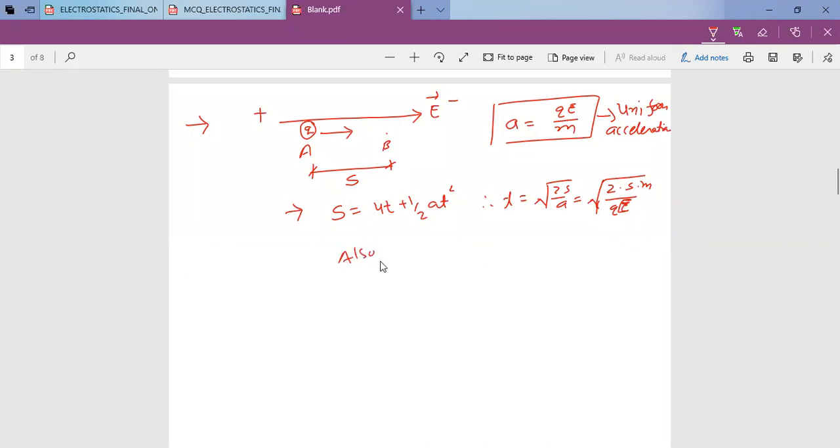Also we can write, suppose potential difference is V, then V equals E into s. Remember, V equals E into s, so you can replace E if you are given potential.